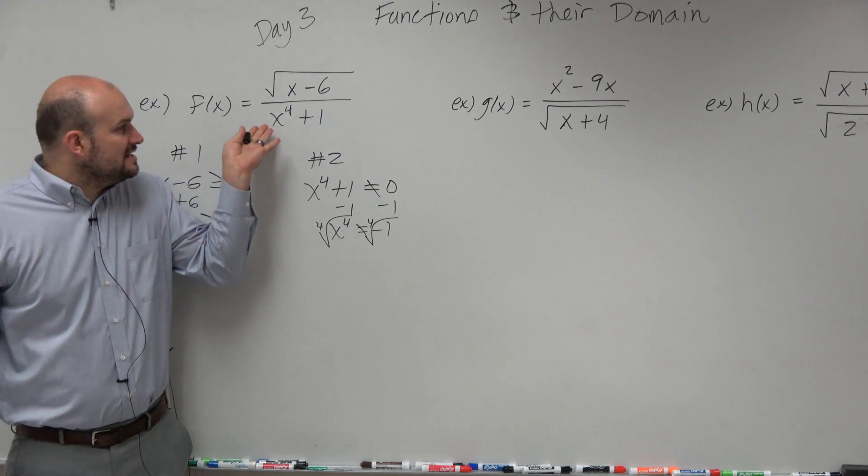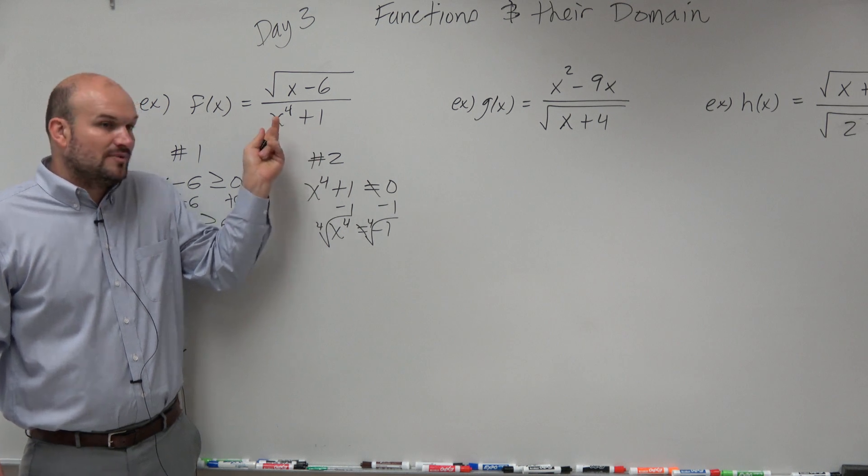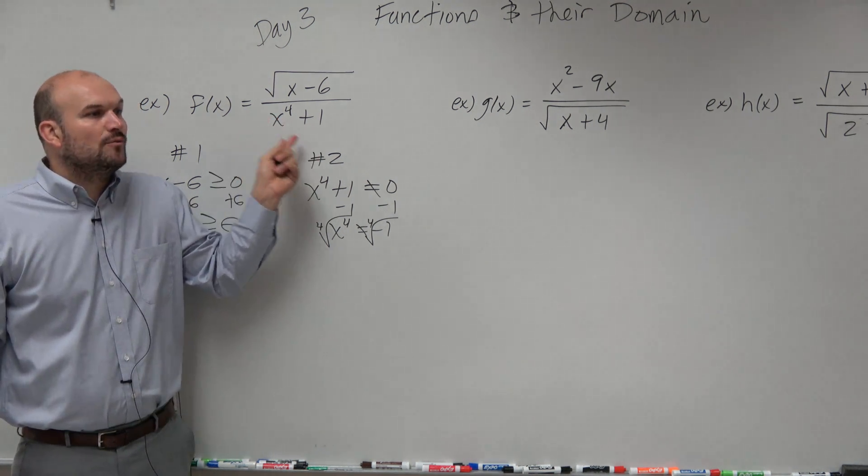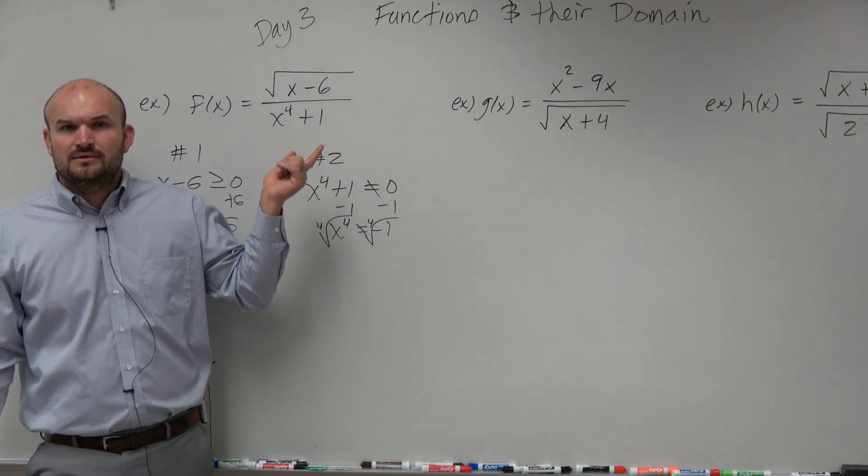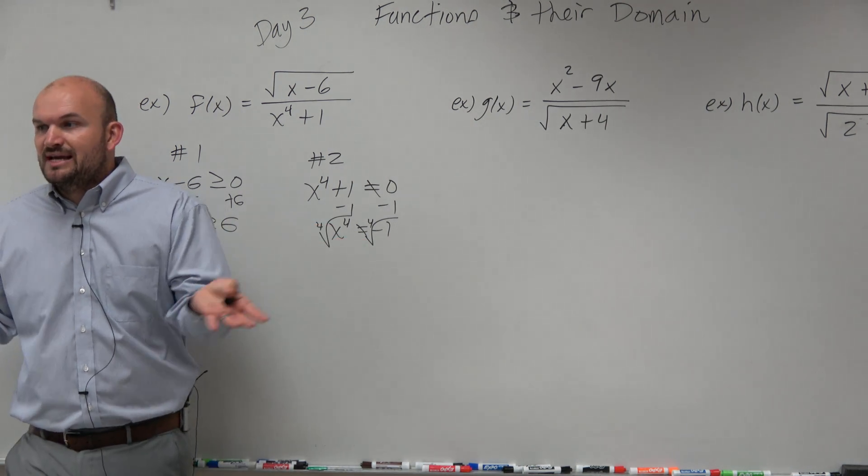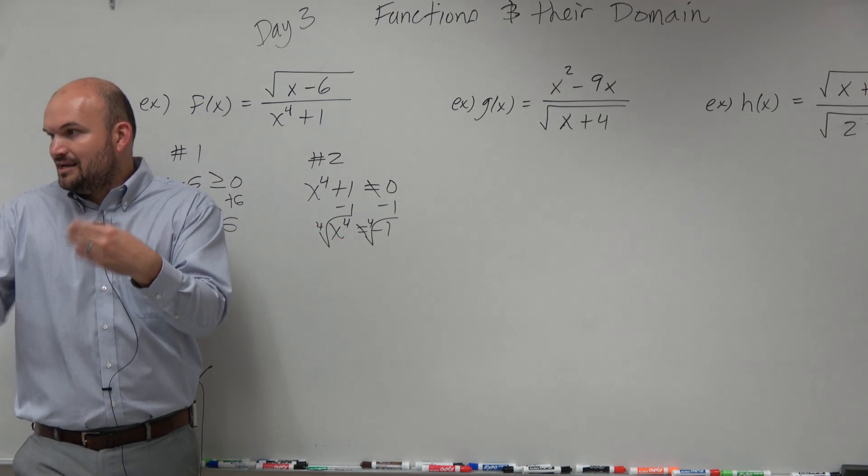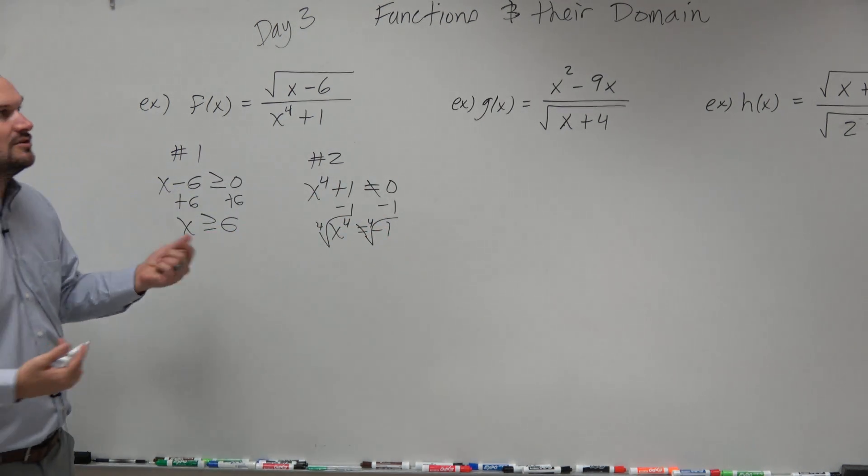Think about it. Is it possible to make any number, we need to make this zero, we need to get some number raised to the fourth power to be negative 1. Is it possible to raise a number to the fourth power to get it to be negative 1? No real number. Or squared. It's impossible to square a number and get it to be negative 1, because any negative multiplied by itself is positive. And if you do that four times or six times, it's still going to be positive.